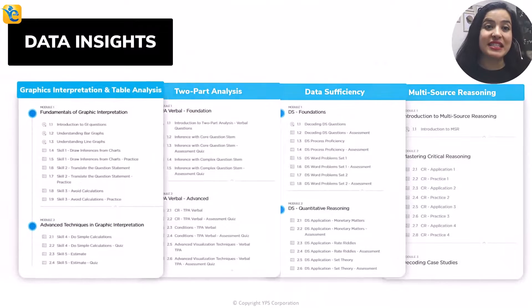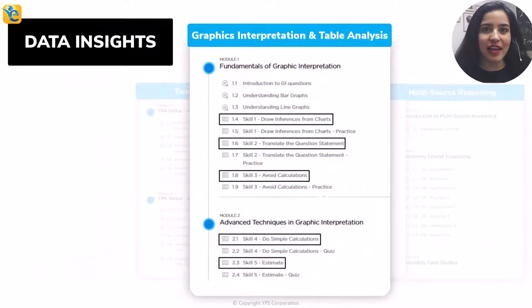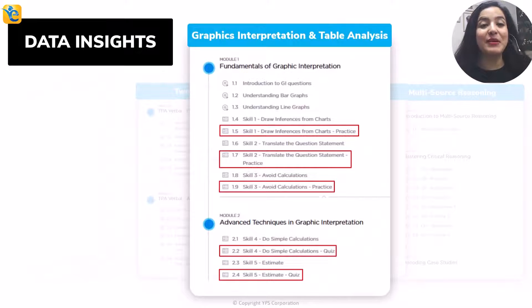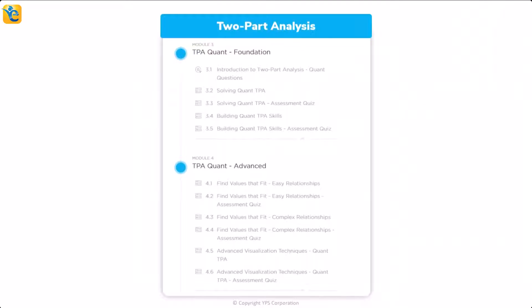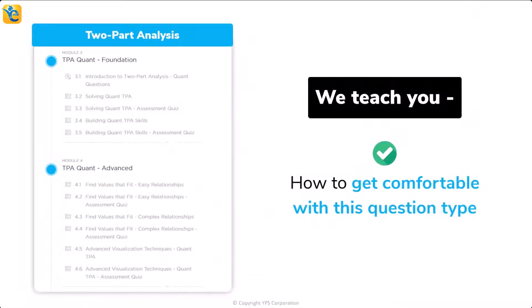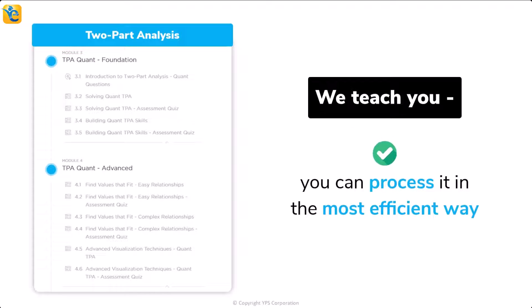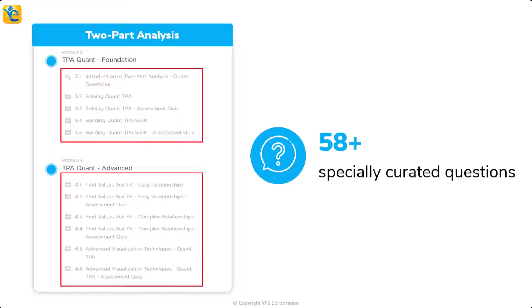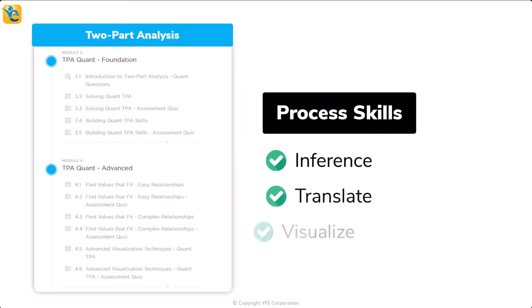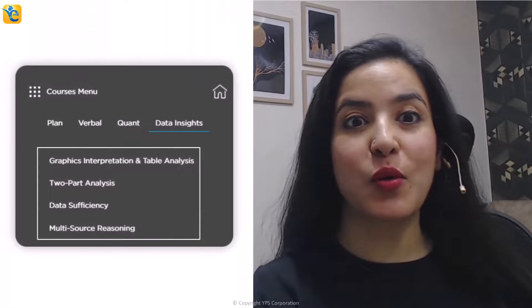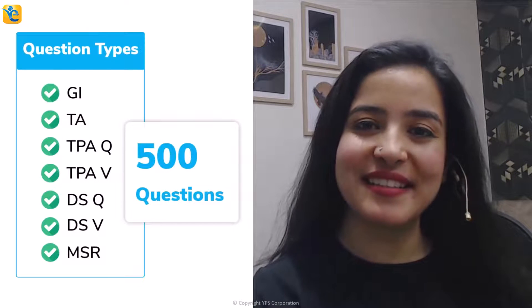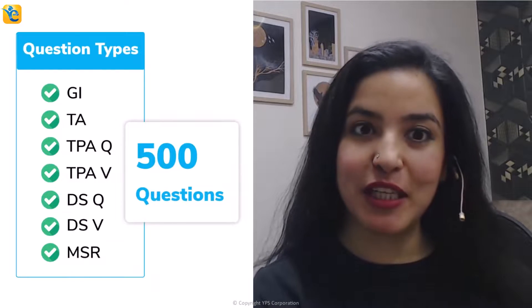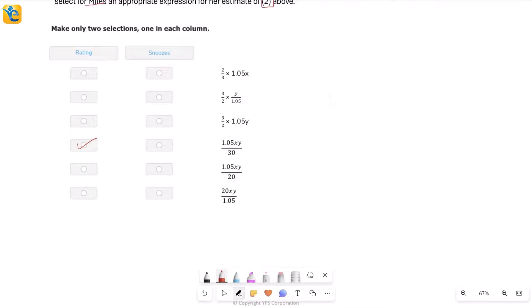We reinforce this skill in every practice quiz. In the TPA quant modules in the Two-Part Analysis course, we teach you how to get comfortable with this question type. We serve more than 58 specially curated questions at a progressive difficulty level covering process skills of inference, translation, and visualization. Throughout the DI course, through around 500 questions, you will learn these process skills to comfortably use the owning-the-data-set approach.